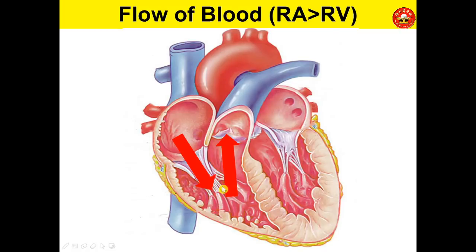The right ventricle is separated from the left side by the interventricular septum, which has two parts: an upper membranous portion and a lower muscular portion.